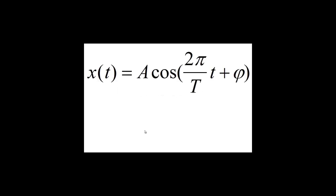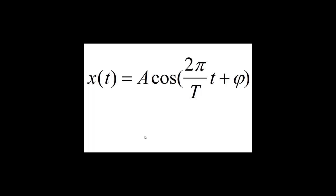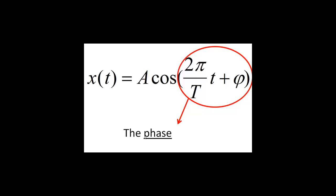In this discussion of sinusoidal functions, we have neglected one parameter that is often included: the phase constant. The phase constant represents the phase at zero time — in other words, the initial angle that we start at. In the argument of the cosine function, we have added the phase constant phi. It is important to distinguish between some confusing terminologies: phi will be referred to as the phase constant, while the entirety of the argument of the cosine function will be referred to as the phase. Sometimes phi is simply called the phase, and the argument of the cosine function is referred to as the instantaneous phase. We will try to be consistent and use the terms phase constant and phase as defined.